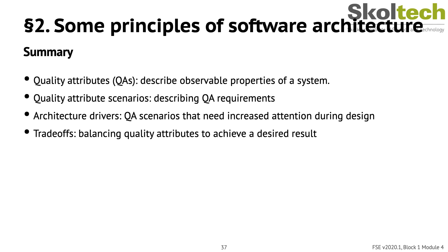To summarize: quality attributes describe observable properties of a system; quality attribute scenarios describe requirements for quality attributes; architecture drivers are quality attribute scenarios that need increased attention during design; and trade-offs are the ways of balancing quality attributes to achieve a desired result.